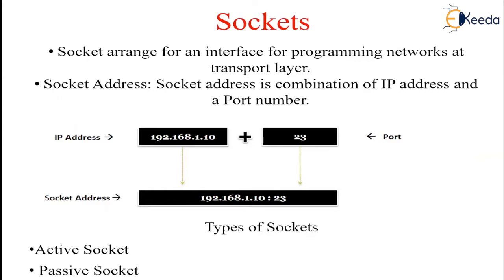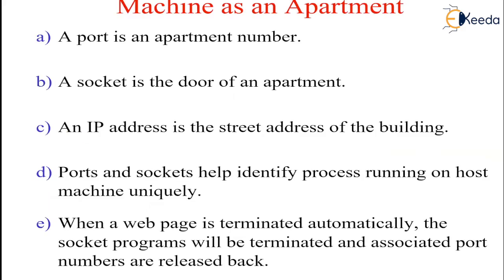For more clarity, consider one example. Think of our machine as an apartment building. Then a port number is an apartment number, and the socket is the door of that apartment. An IP address is the street address of the building. Ports and sockets help to uniquely identify processes running on the host machine. When a web page is terminated, the socket programs will be terminated and associated port numbers are released back.